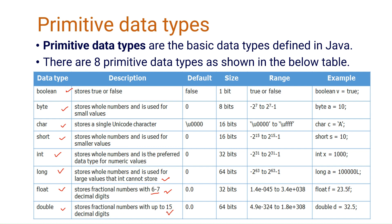The sizes of the primitive data types are: boolean is one bit, byte is one byte (8 bits), char in Java is two bytes (16 bits), short is also 16 bits, int is 32 bits which is 4 bytes, long is 64 bits, float is 32 bits, and double is 64 bits.